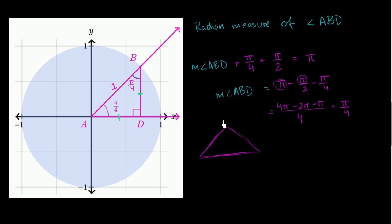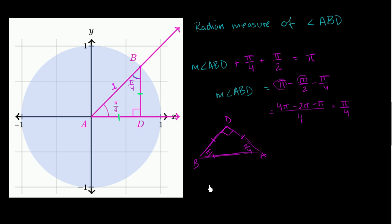So if we label the triangle with D at the bottom left, B at the top, and A at the bottom right, we have a right angle at D, pi over 4 radians at A, and pi over 4 radians at B. When your two base angles are the same, you're dealing with an isosceles triangle — and because the angles are not all the same, it's not equilateral. So if your base angles are the same, the corresponding sides are going to be the same.